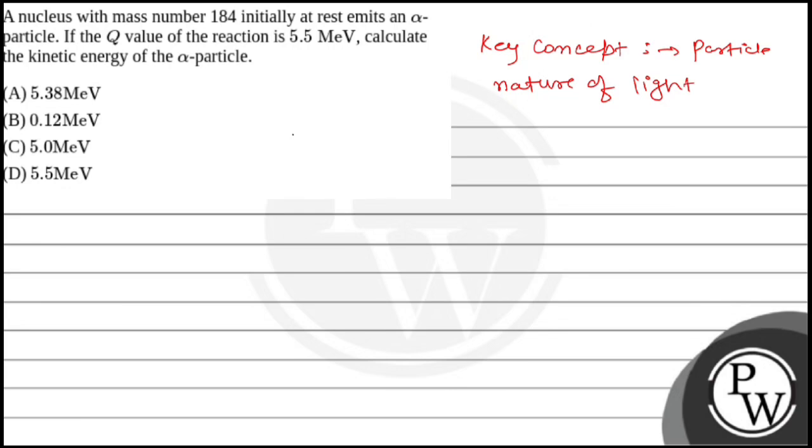Initially, we have a mother nucleus at rest with mass A = 184. After decay, it releases an alpha particle. Consider the remaining nucleus as A prime with some velocity.